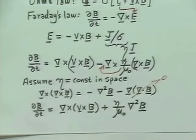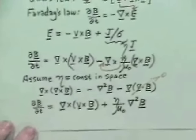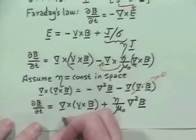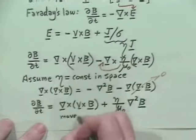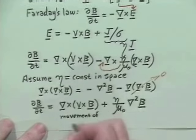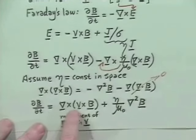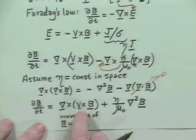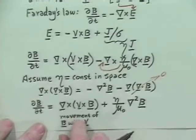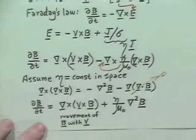We can identify the terms. The first term — curl of V cross B — is the term we dealt with in getting the frozen flux theorem. It says the magnetic field moves with the plasma flow velocity V. This convects the magnetic field along with the plasma, because in this term we have effectively infinite conductivity, and therefore the field lines are frozen into the plasma electrically.